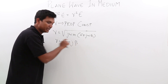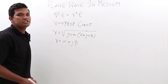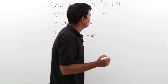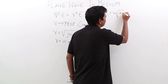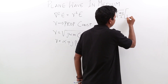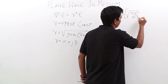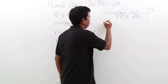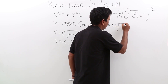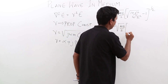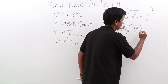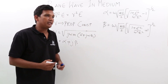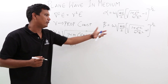Since gamma is the propagation constant, it will have an attenuation constant and a phase constant. For a plane wave, the attenuation constant alpha would be given by omega times the square root of (mu epsilon / 2) times the square root of (1 plus (sigma squared / omega squared epsilon squared)) minus 1, raised to the power half. Similarly, beta would be given by omega times the square root of (mu epsilon / 2) times the square root of (1 plus (sigma squared / omega squared epsilon squared)) plus 1.